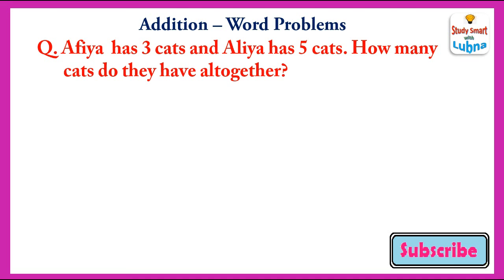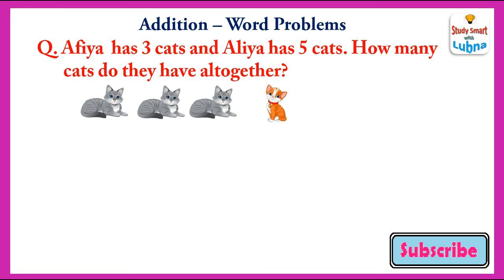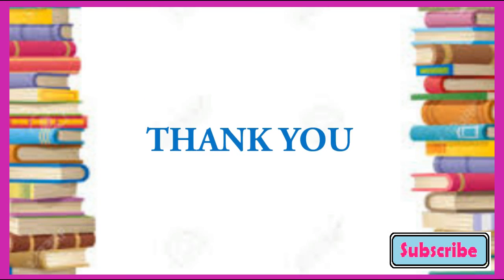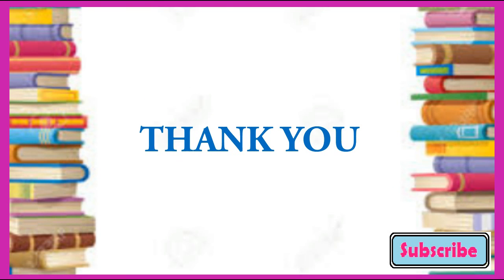Another word problem. Afiya has three cats and Alia has five cats. How many cats do they have altogether? For this we will add three cats and five cats. Three plus five equals eight. So Afiya and Alia both have eight cats altogether. Thank you. Bye!